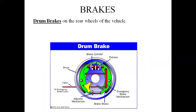Drum brakes have the following elements: two brake pads (shoes) held together by a spring. With the help of the pressure lines, the brake cylinders move the brake shoes outward toward the drum when braking action takes place.